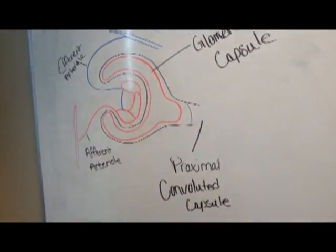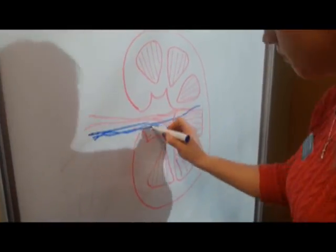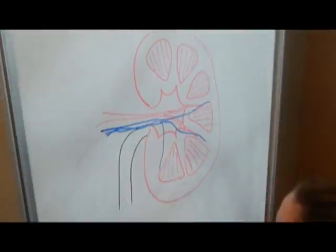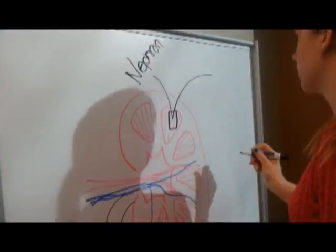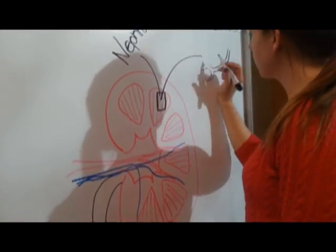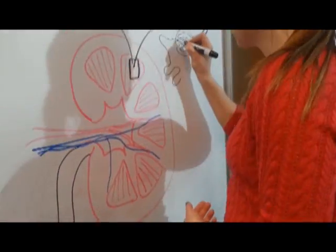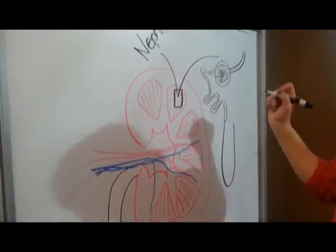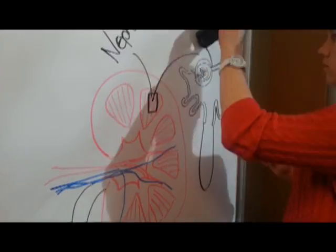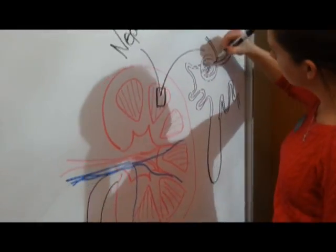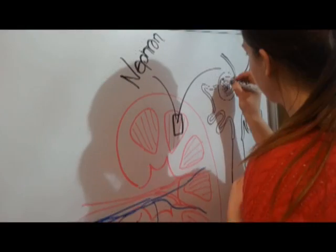Blood enters the kidney by the renal artery. The arterioles feed into the glomerular capillaries. As the blood travels through the glomerular capillaries, filtration causes a lot of plasma content to spill out. When they spill out of the glomerular capillaries, they end up within the glomerular capsule, which is continuous with the rest of the renal tubules. It branches into small arteries and eventually forms an arteriole.